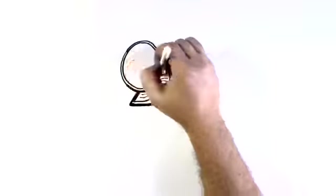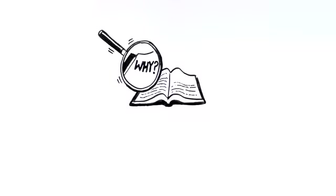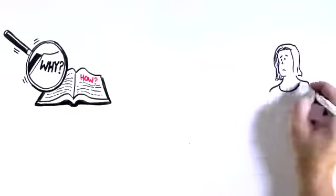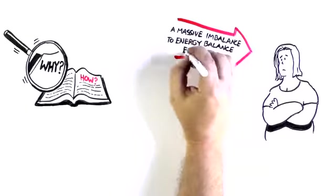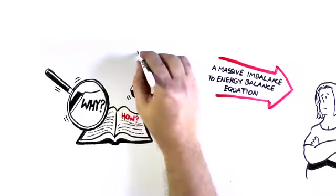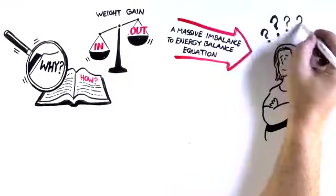So now that we've looked at one of the theories behind why obesity occurs, let's look at theories of how it occurs. It's often assumed that obesity in people like Amanda is a result of a massive imbalance to their energy balance equation that their intake vastly exceeds their expenditure. But is this always the case?